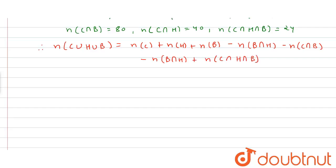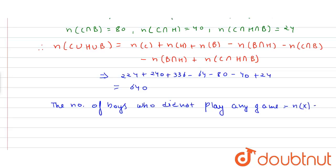By putting values, we get 224 plus 240 plus 336 minus 64 minus 80 minus 40 plus 24, which equals 640. The number of boys who did not play any game equals n(X) minus n(C ∪ H ∪ B), which equals 800 minus 640, which equals 160, which is our answer.